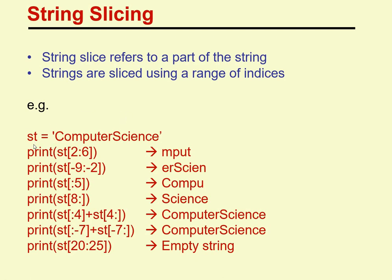Let's look at an example. ST = 'computer science'. The index for 'C' is 0, 'o' is 1, 'm' is 2, 'p' is 3, 'u' is 4, 't' is 5, and so on. For the statement print(ST[2:6]), 2 is the starting index and 6 is the ending index — the ending index is not included. So starting from index 2 ('m'), the output will be 'mput'.